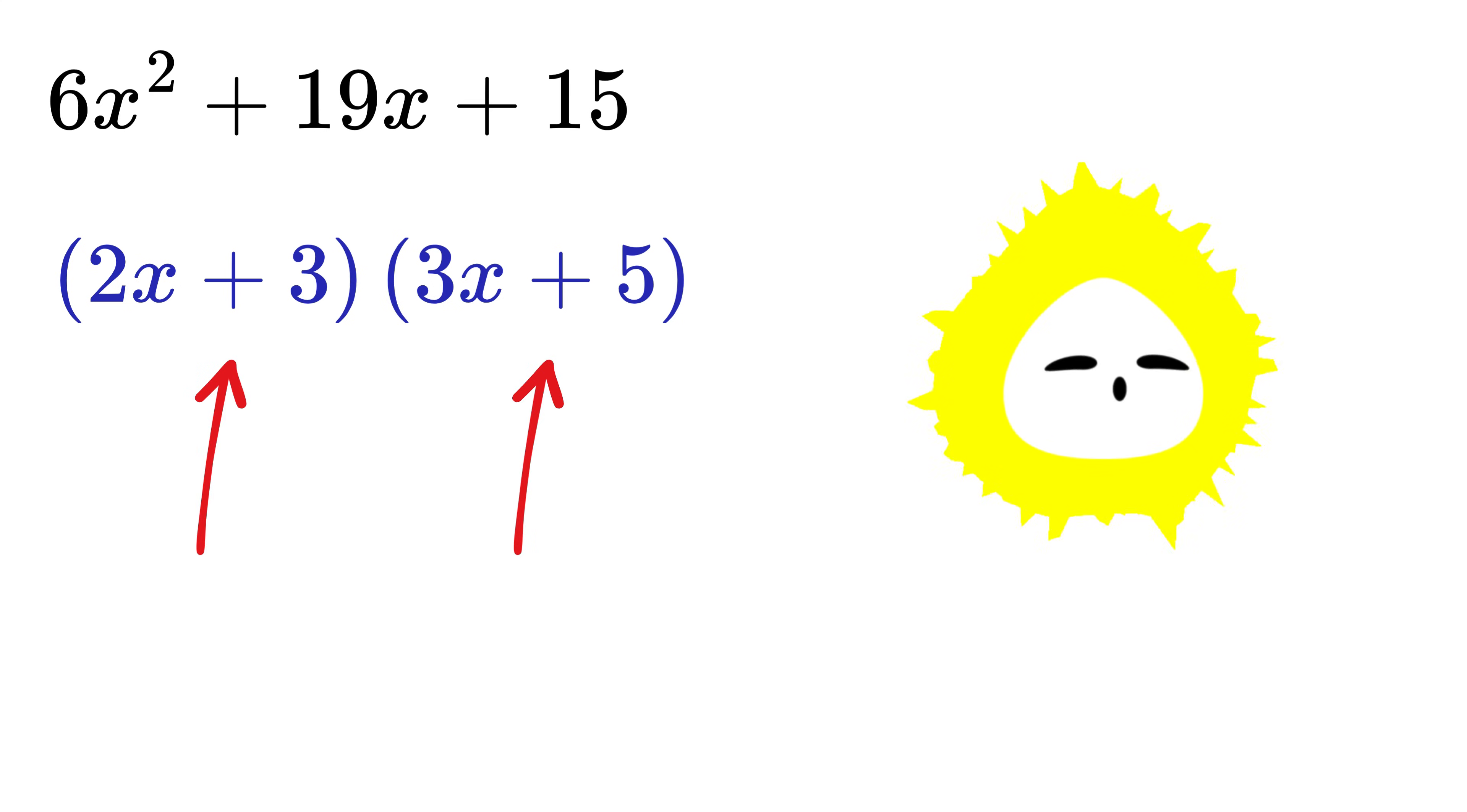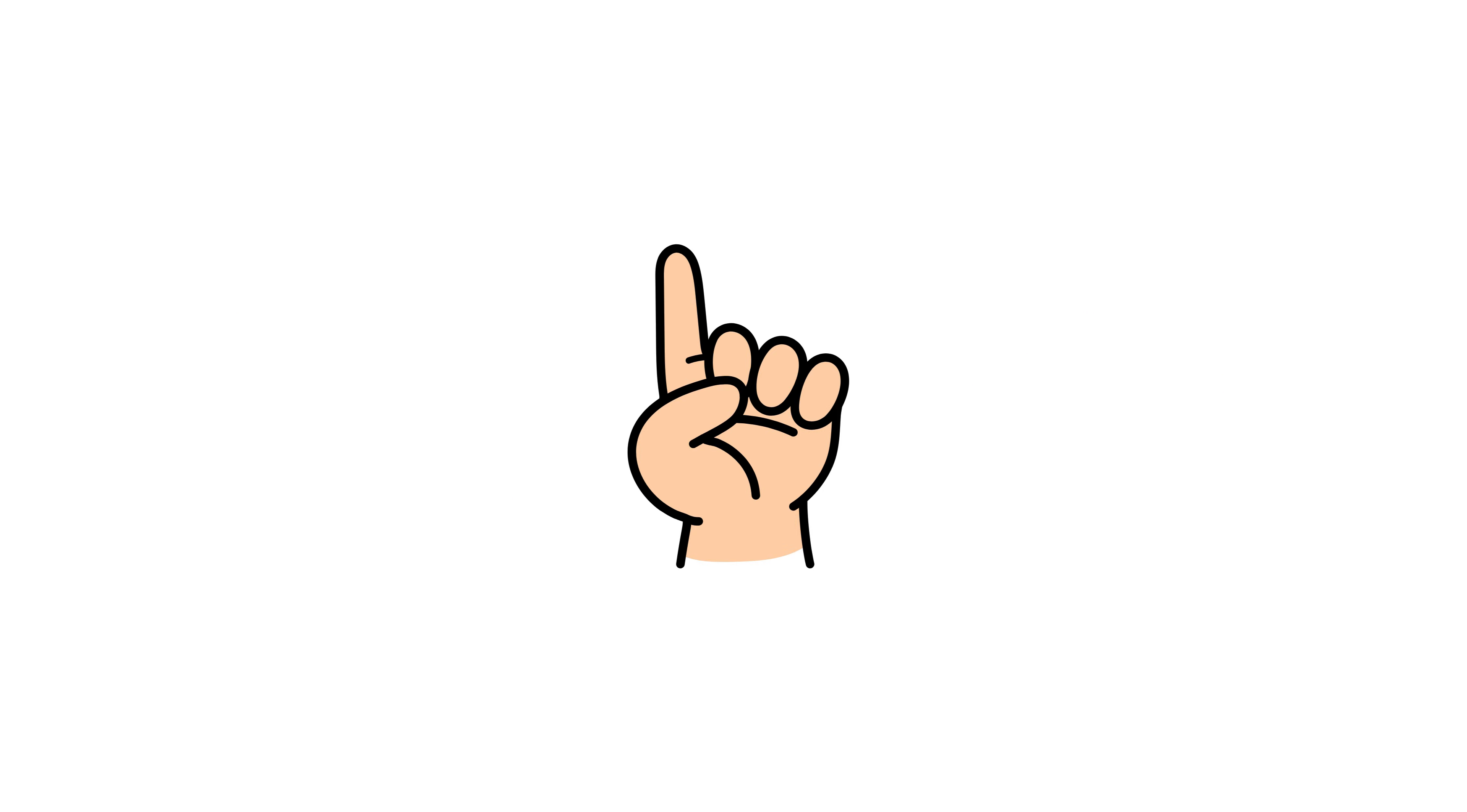See, that was lightning fast. Let us take one more example. Suppose we have 3x squared minus 17x minus 28.